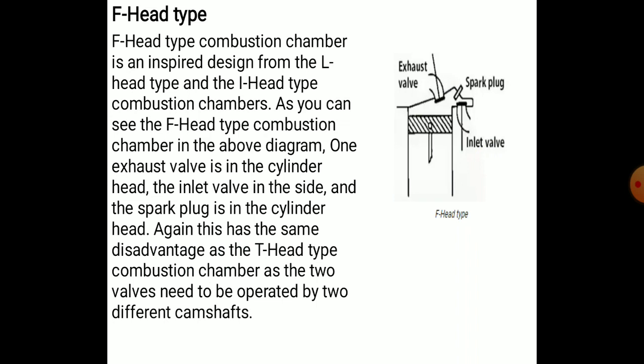The F-headed type combustion chamber is an inspired design from both the L-headed and I-headed types. One exhaust valve is in the cylinder head and the inlet valve is on the side with the spark plug. This type shares the same disadvantage as the T-head type, requiring two separate camshafts. This concludes the discussion on different types of combustion chambers and their characteristics. Thank you very much friends — we will see the next topic in another session.